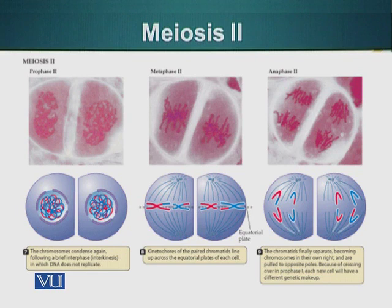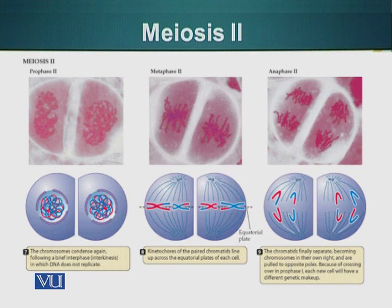In metaphase 2, the chromosomes line up at the metaphase plate. The kinetochores of these chromosomes have connected to the kinetochore microtubules, which are the spindle fibers coming from the centrosomes. When anaphase starts, these two sister chromatids will separate. Cohesin is holding these sister chromatids, and once cohesin is disintegrated, the sister chromatids move to the opposite ends.